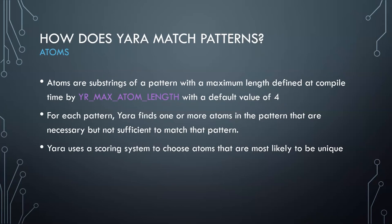Atoms are substrings of a pattern with a maximum length defined at compile time — the default value is four bytes, which seems to be a good balance for most use cases. For each pattern under strings — be it a string, hex string, or regex — YARA tries to find one or more atoms within that pattern to anchor detection. When YARA does its initial scan of the whole file, it's only looking for atoms, not running all full patterns right away.